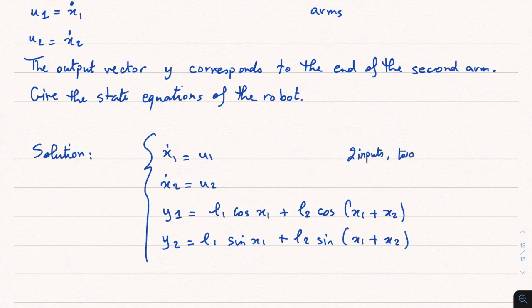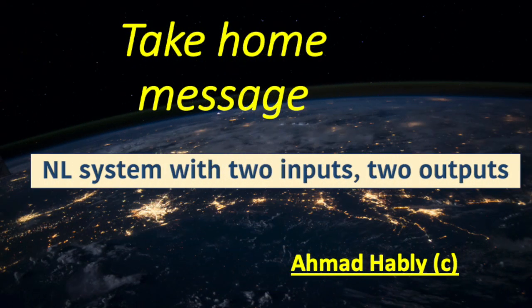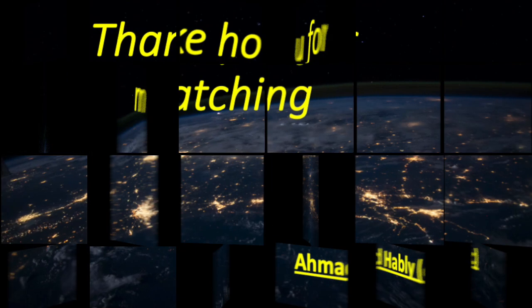So here we have two inputs, two states, and two outputs. Take-home message: we have a non-linear system with several inputs and outputs.